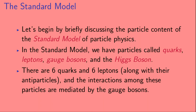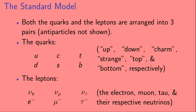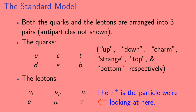Let's begin by briefly discussing the particle content of the Standard Model of particle physics. In the Standard Model, we have particles called quarks, leptons, gauge bosons, and the Higgs boson. There are six quarks and six leptons, along with their antiparticles, and the interactions among these particles are mediated by the gauge bosons. Both the quarks and the leptons are arranged into three pairs. The quarks are the up, down, charm, strange, top, and bottom quarks. The leptons are the electron, the muon, the tau, and their respective neutrinos. The tau, in the lower right-hand corner, is the particle we're looking at in this video.